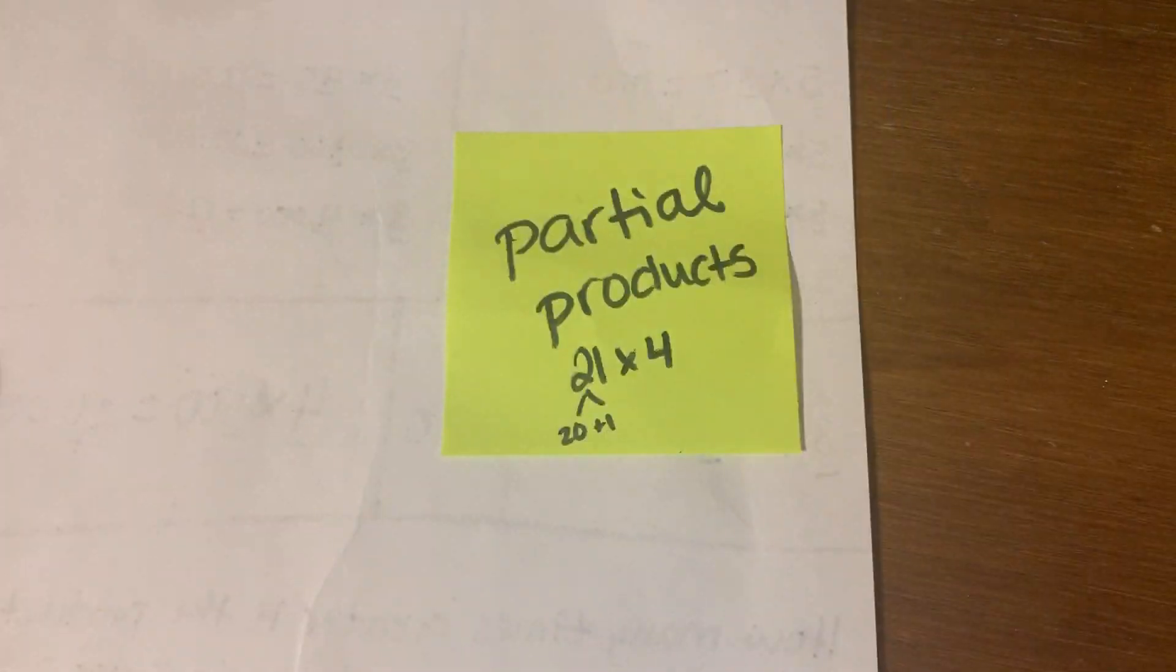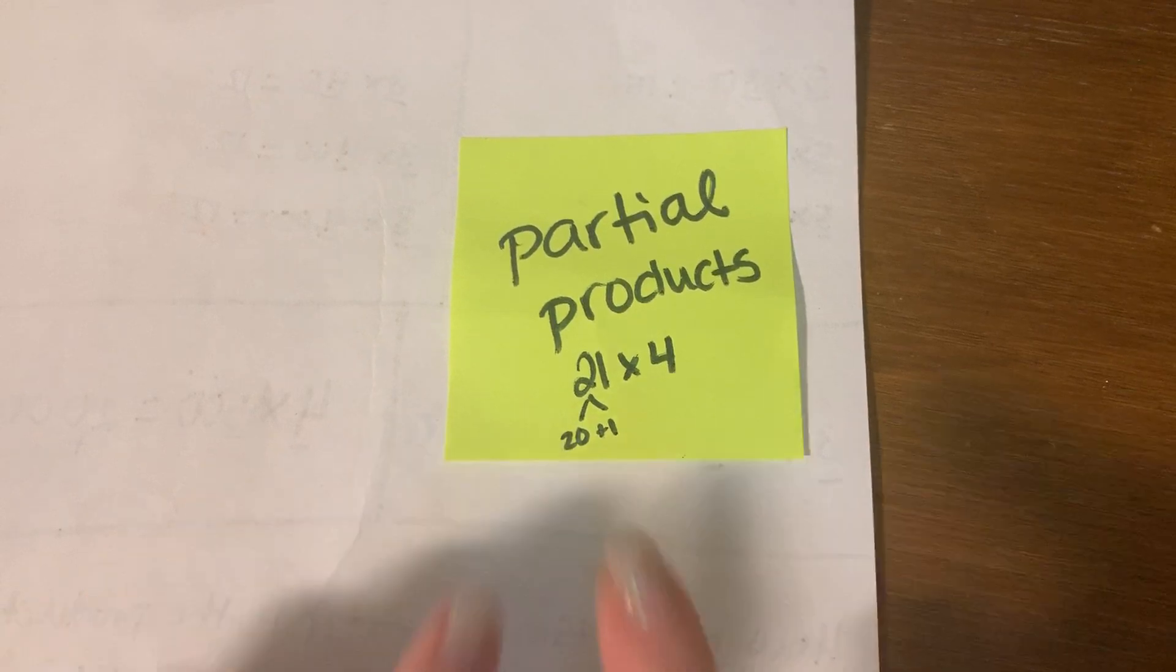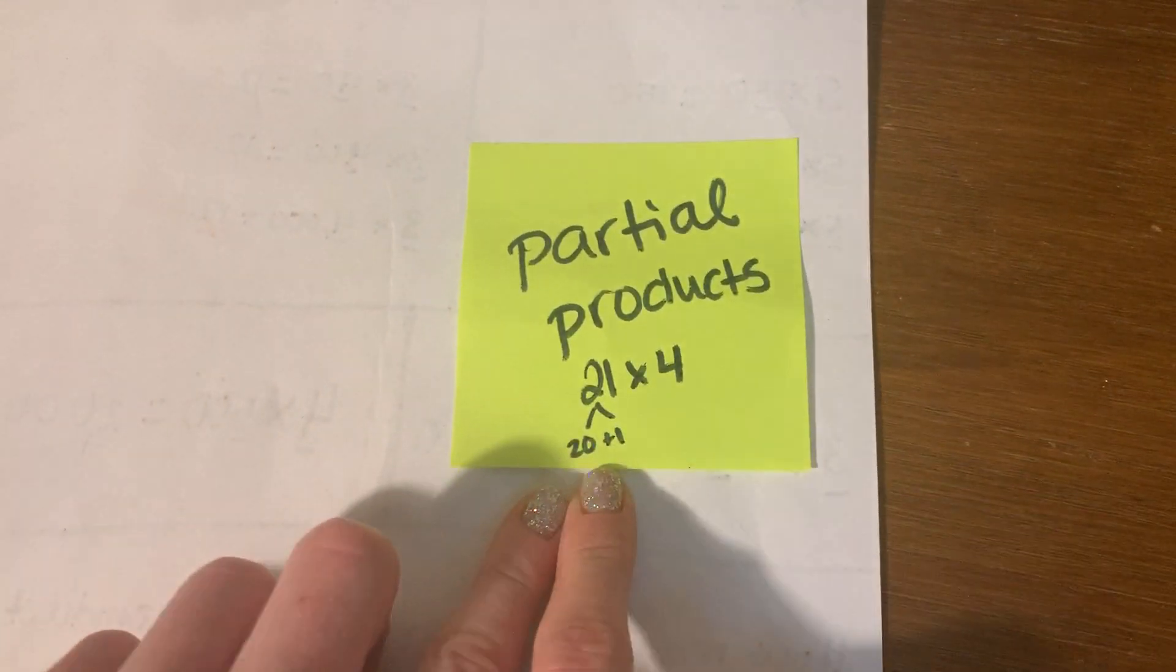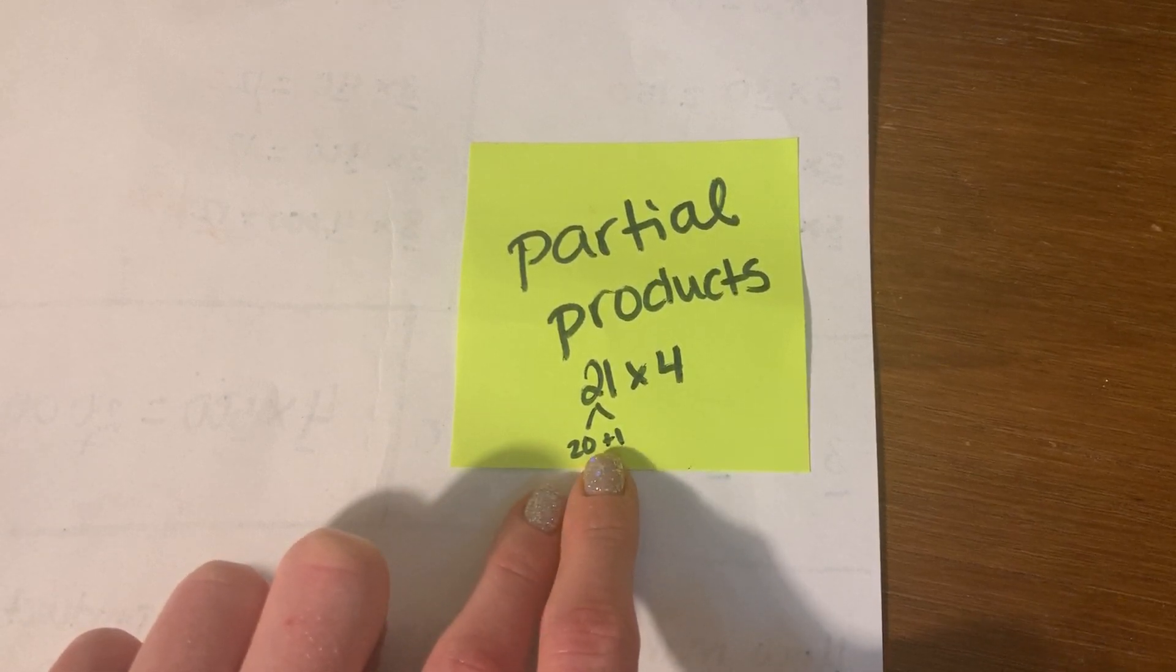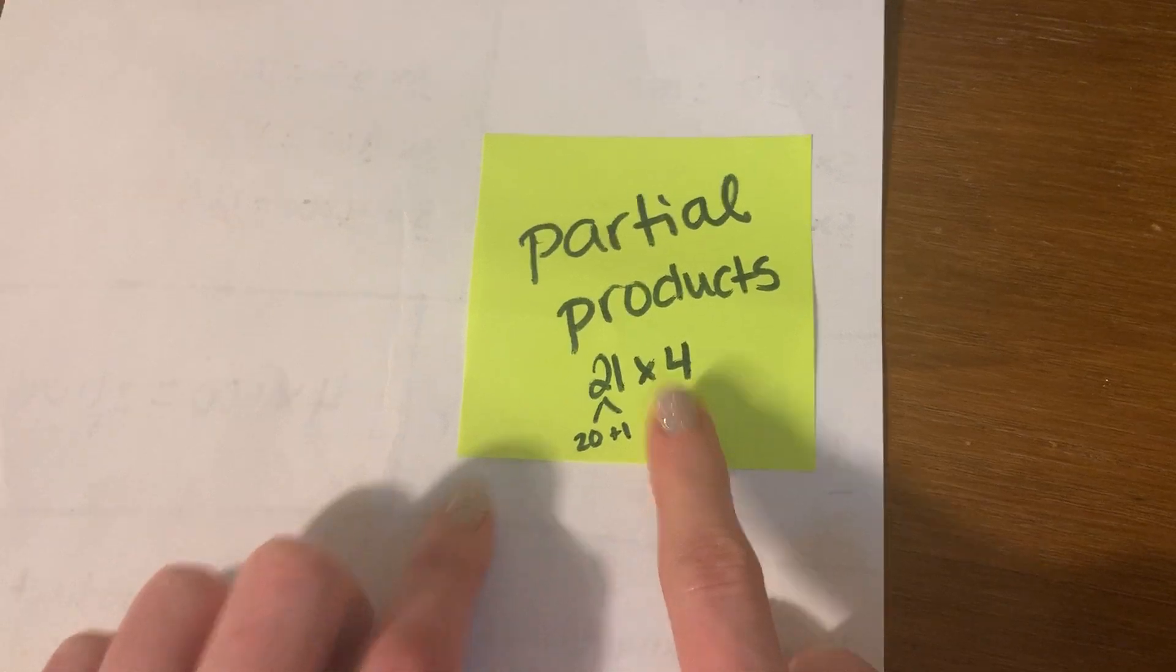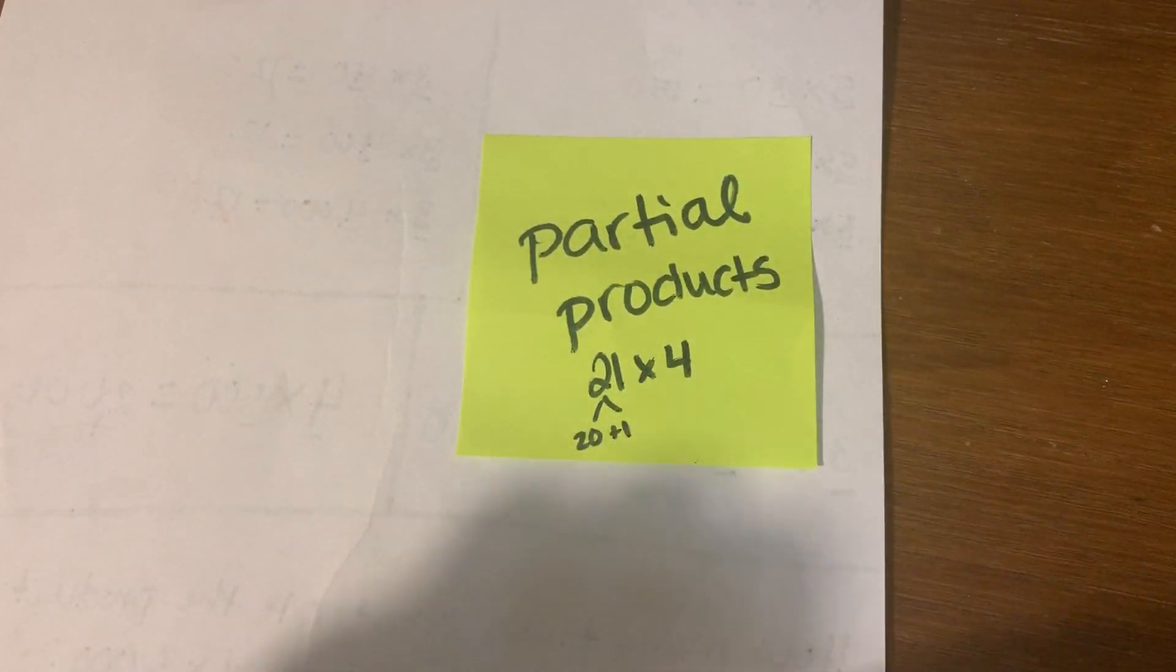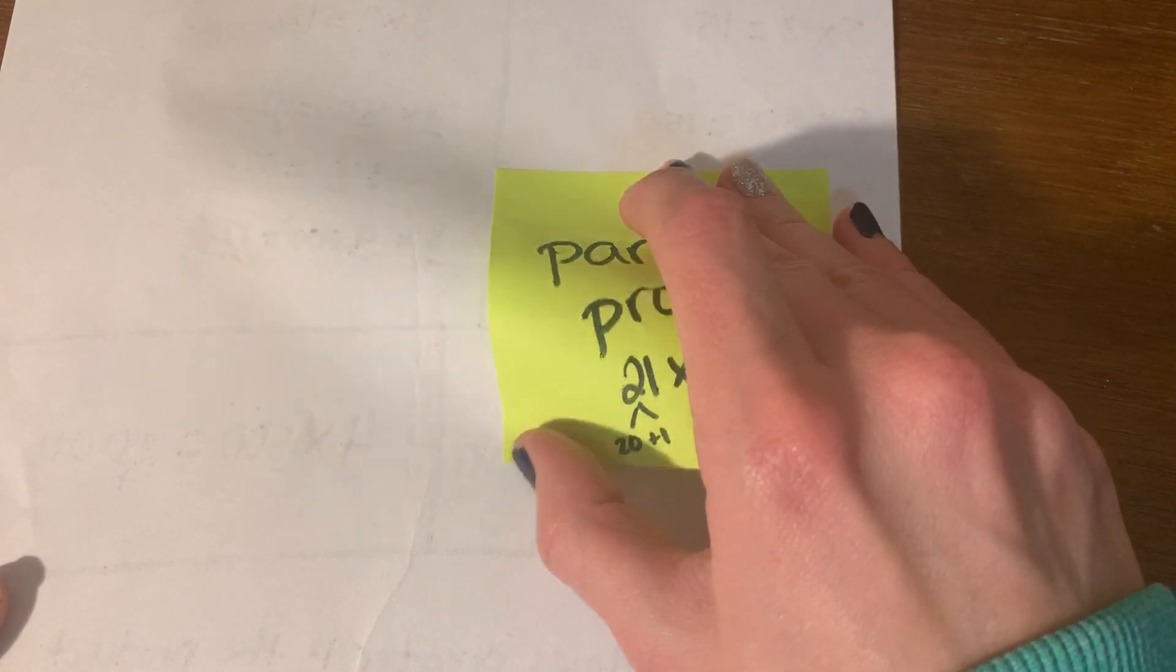So the point of partial products is for you to understand that you can take a larger number, two digits or more, and you can break it down by putting the number in expanded form and then just multiplying each of those numbers by the number here. So they're calling it partial products because you're breaking it into parts. We're going to solve some problems pretty much the same way we've been doing, except we're just not going to draw the area model this time.